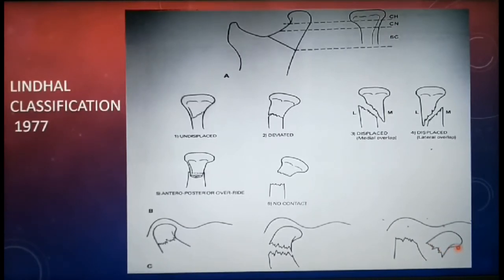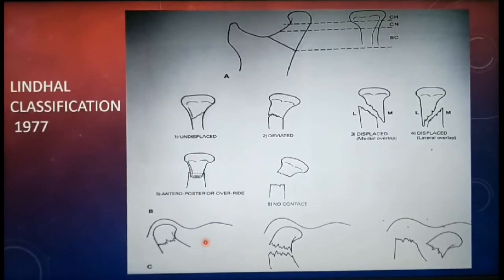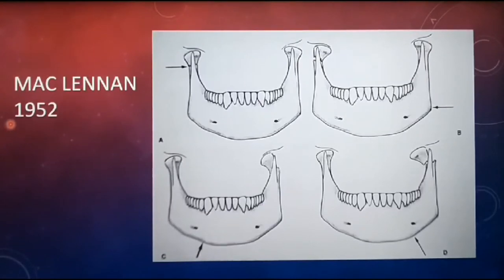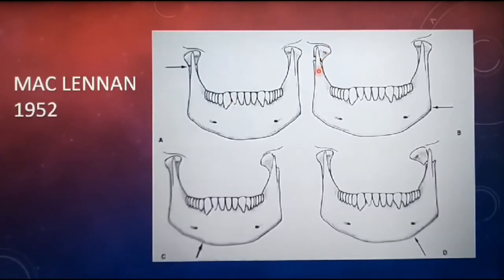This is how Lindahl classified condylar fractures based on anatomic location, relationship of condylar segment to mandibular fragment, and relationship between condylar head and glenoid fossa. Another classification was given by MacLennan in 1952, consisting of four divisions. Type 1 is a non-displaced fracture. Type 2 is fracture deviation — simple angulation of the fracture segment without overlap or separation, including greenstick fractures common in children.